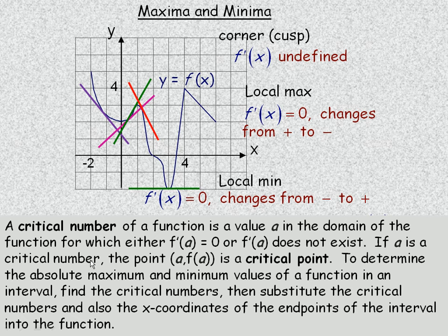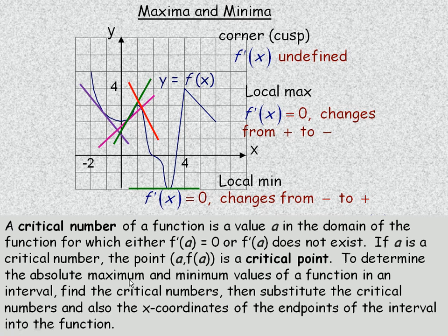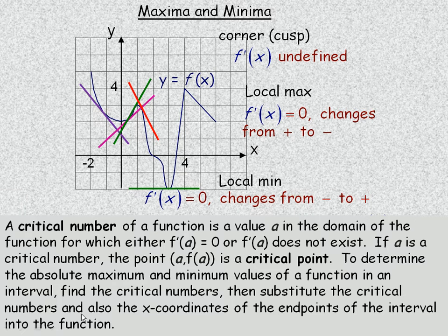If a is a critical number — a place where the derivative is either zero or undefined — then the point (a, f(a)) is called a critical point. It's most likely a place where there's a local minimum or local maximum, though there are a few exceptions. To determine the absolute maximum and minimum values of a function on a given interval, you find the critical numbers, then substitute those critical numbers and the x-coordinates of the endpoints of the interval into the function, and look for the biggest and smallest y-values.